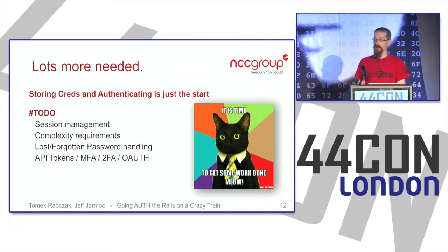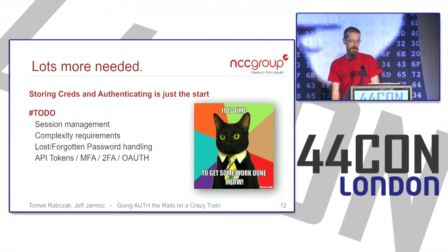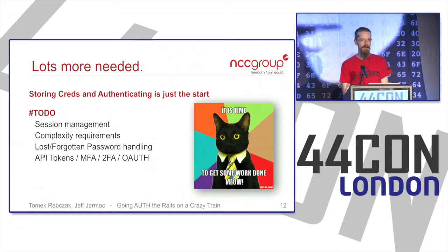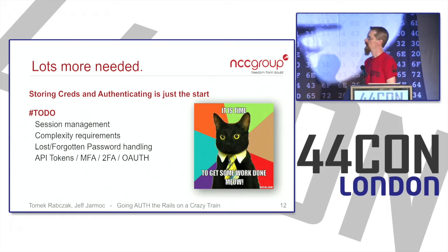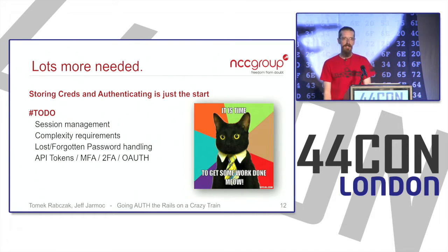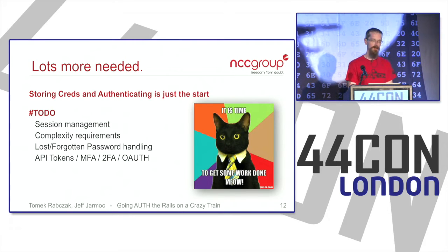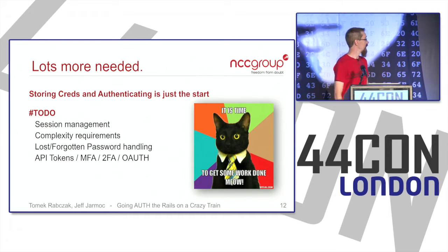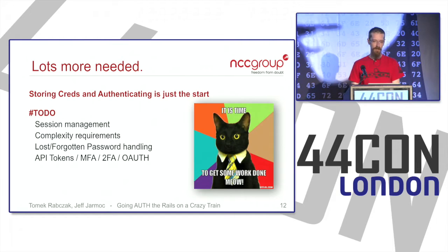But there's a lot more you need to do. Things like session management — Rails can help with that. You may want password complexity requirements. A big one is handling lost and forgotten passwords, which is complicated and easy to do wrong. Depending on your application, you might also need API tokens, multi-factor or two-factor authentication, or OAuth.